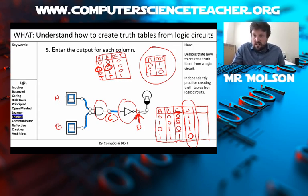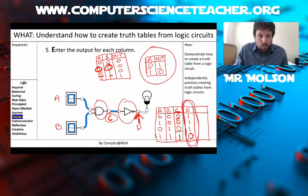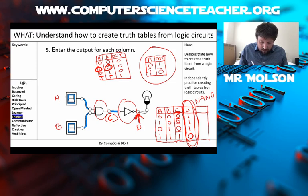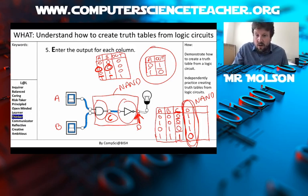What you might notice — and hopefully you have — is that the output from this circuit is the same as the output you get from another logic gate. Which logic gate is it? It is, of course, a NAND gate. So in fact, we could replace these two gates — the AND gate followed by the NOT gate — with a single NAND gate. Hopefully that's taken you through the TABLE mnemonic and it makes sense how we create a truth table for a circuit.